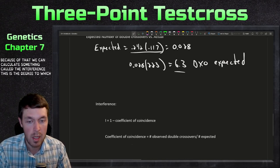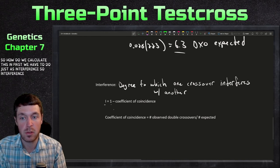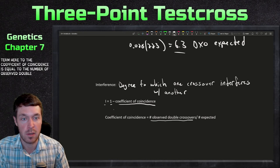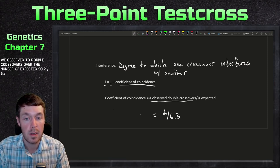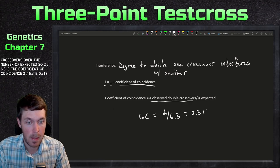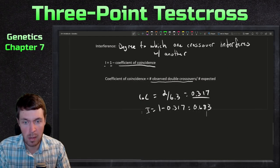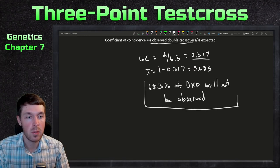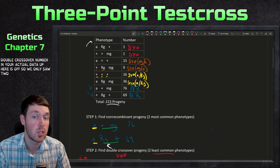We only saw 2 double crossovers but expected about 6.3, so we can calculate interference. The coefficient of coincidence (c.o.c.) equals observed double crossovers over expected: 2 divided by 6.3 equals 0.317. Interference equals 1 minus the coefficient of coincidence: 1 minus 0.317 equals 0.683. This means 68.3% of double crossovers will not be observed.